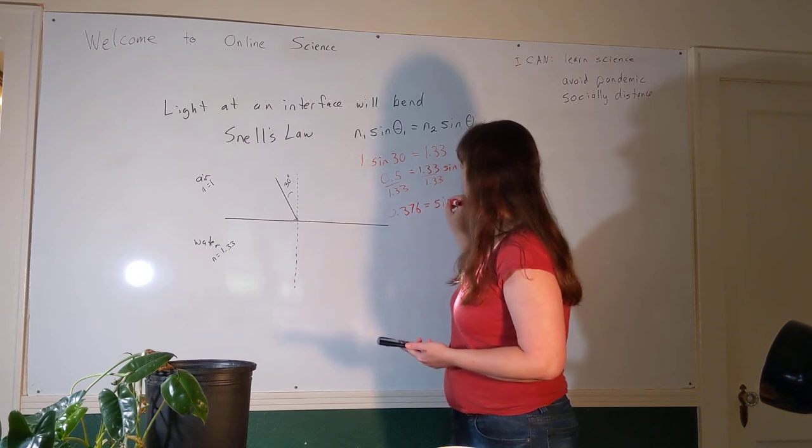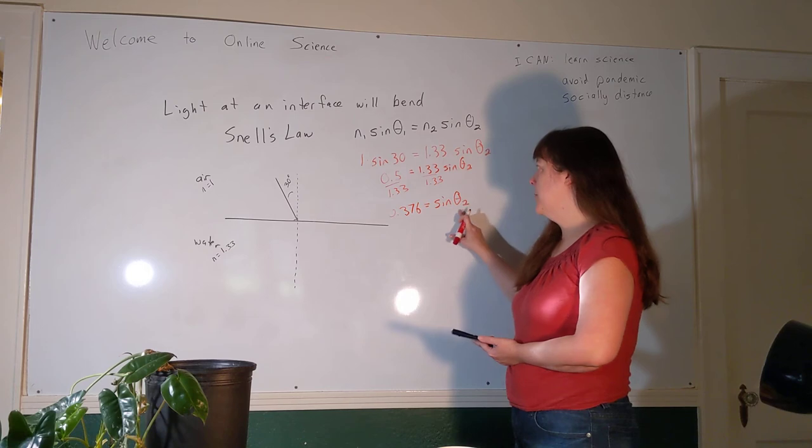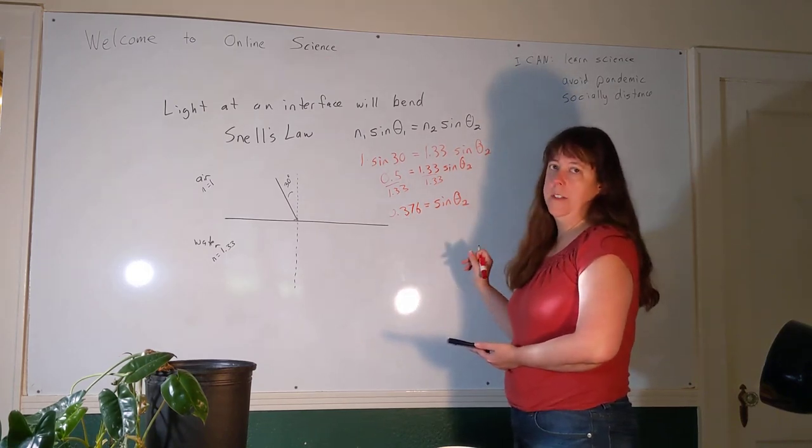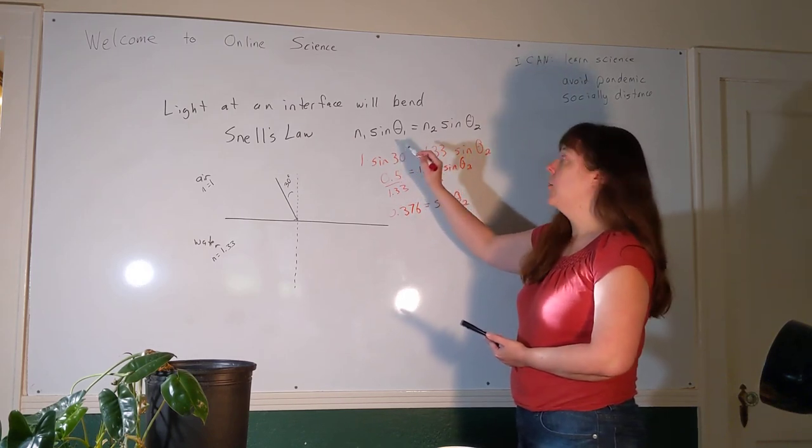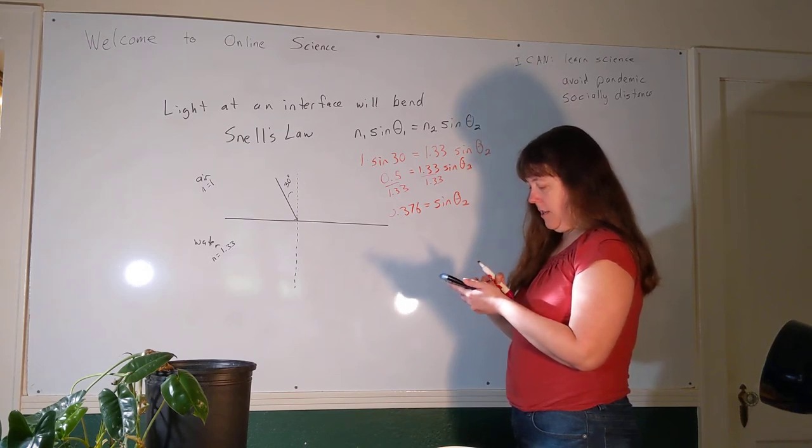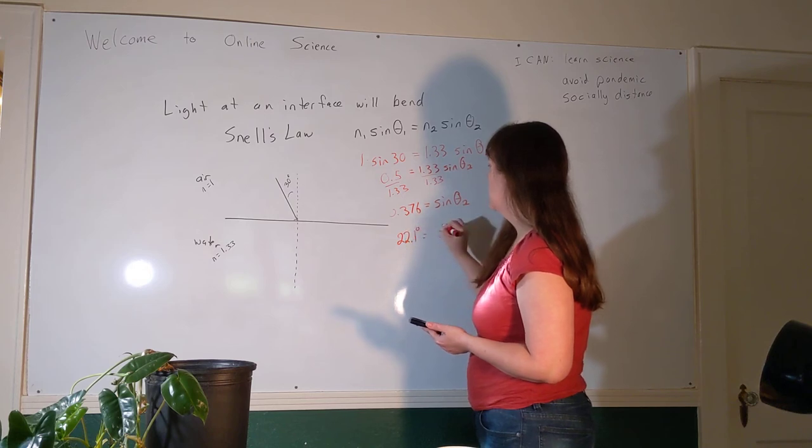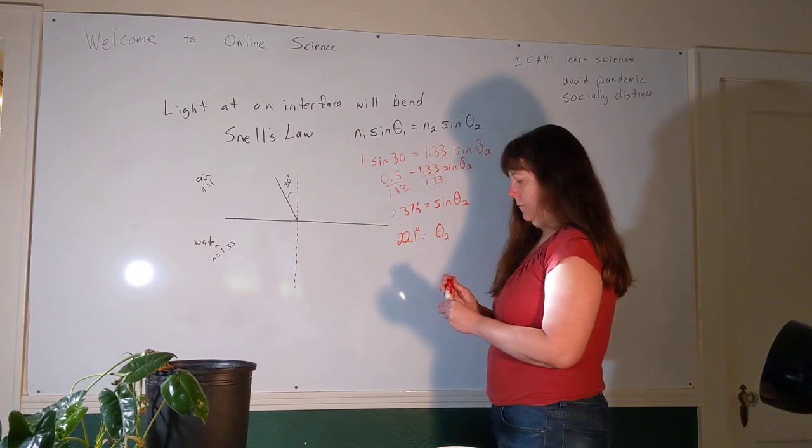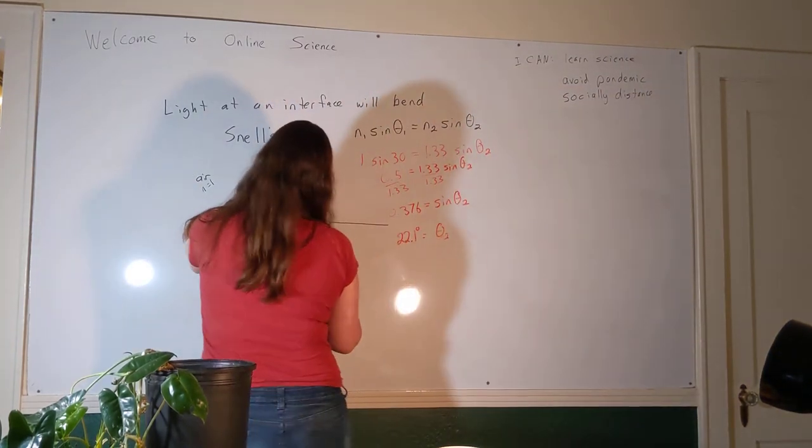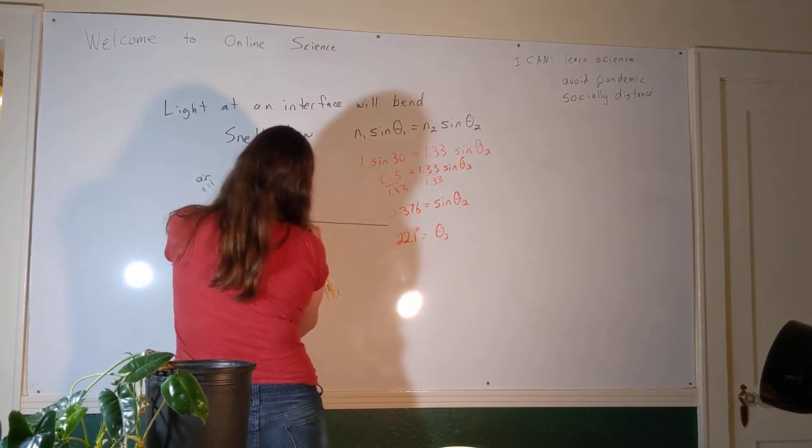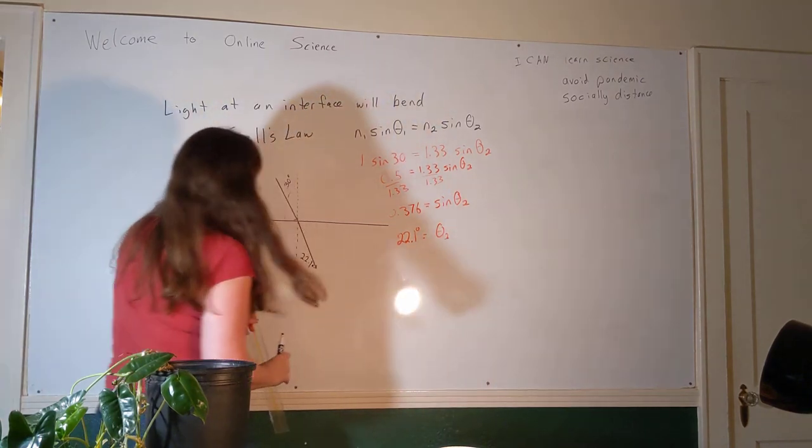0.376 is equal to the sine of theta 2. Alright, this is not the angle; this is the sine of the angle we're looking for. So to figure out what theta is, we're going to take the inverse sine of 0.376. We're going to ask our calculator what angle has a sine of 0.376. The number we started with was in degrees, so our calculator had better still be in degrees. So inverse sine of that answer gives me a theta of 22.1 degrees. So our refracted angle is less than our incident angle in this case.